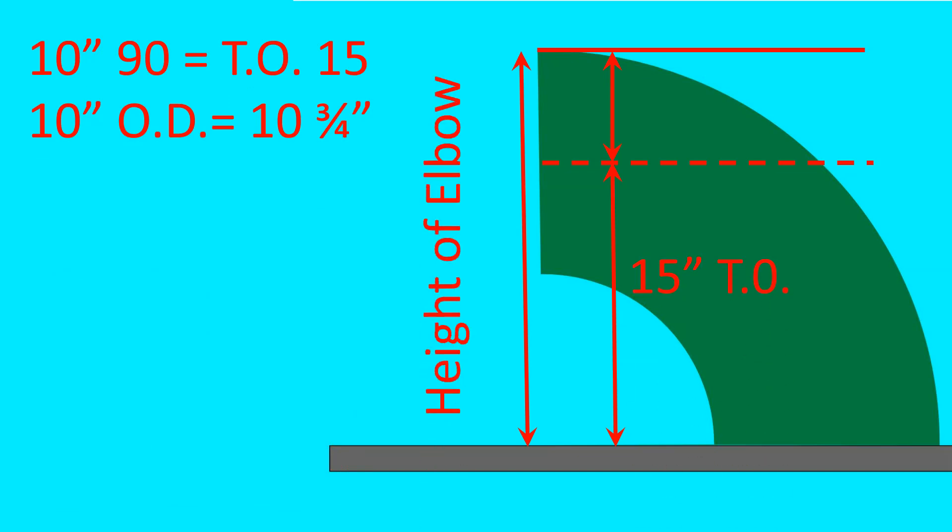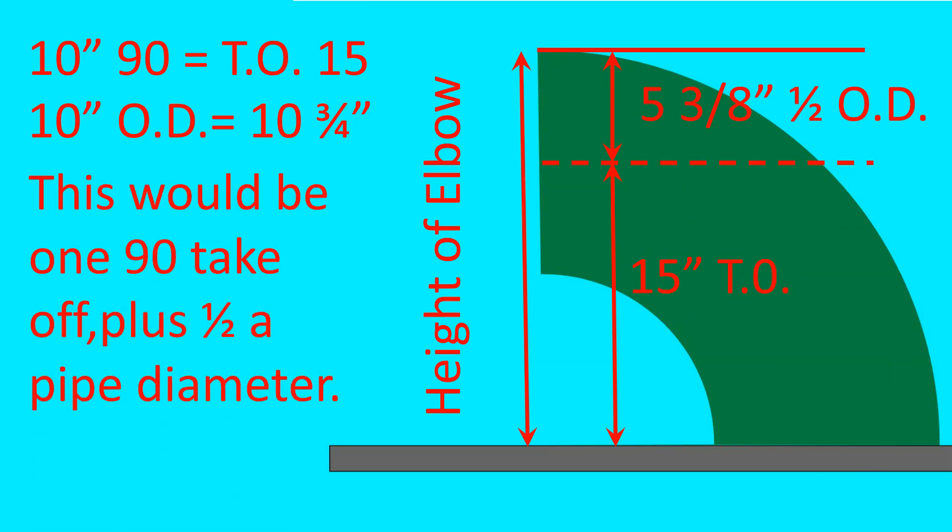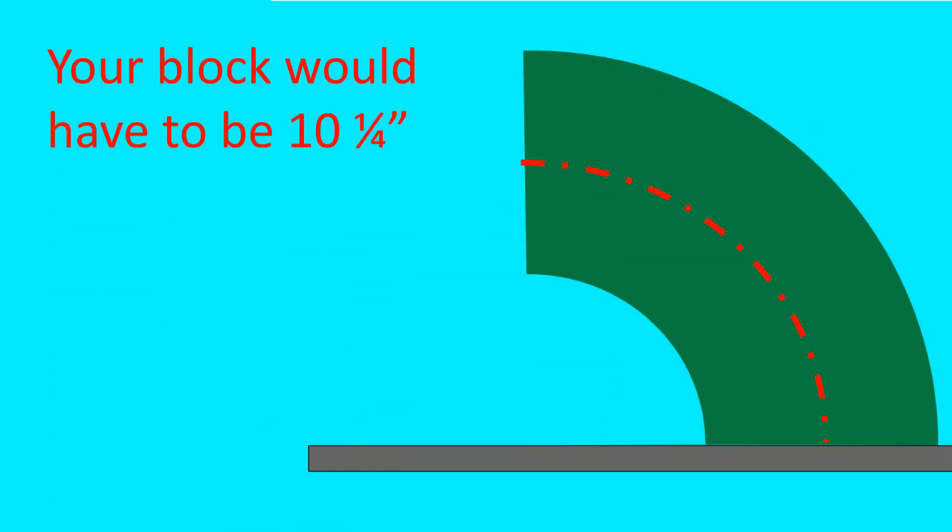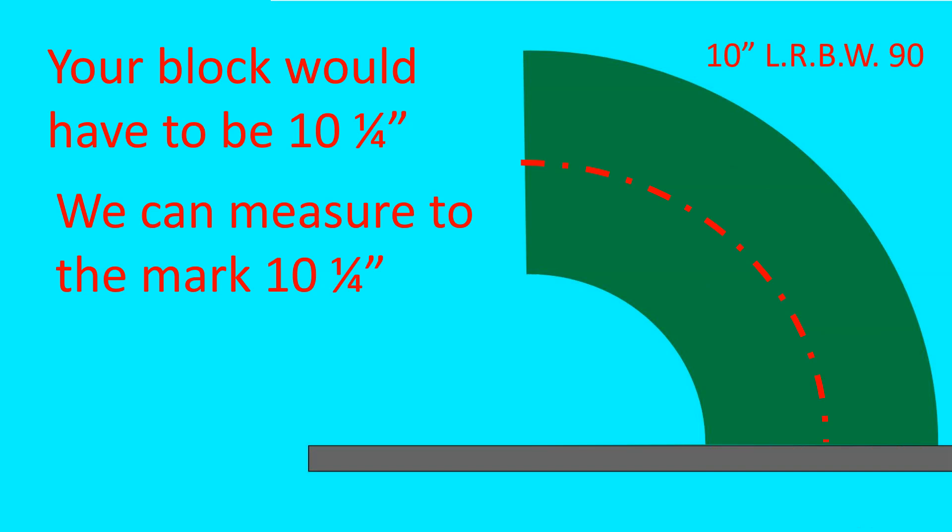So 15 for the takeoff. 5 and 3 eighths for half the OD. This would be 1 90 takeoff plus 1 half pipe diameter, giving you 1 foot 8 and 3 eighths. Your block would have to be roughly 10 and a quarter inches. We can measure to the mark at 10 and a quarter instead of using a block. I'll show you how.